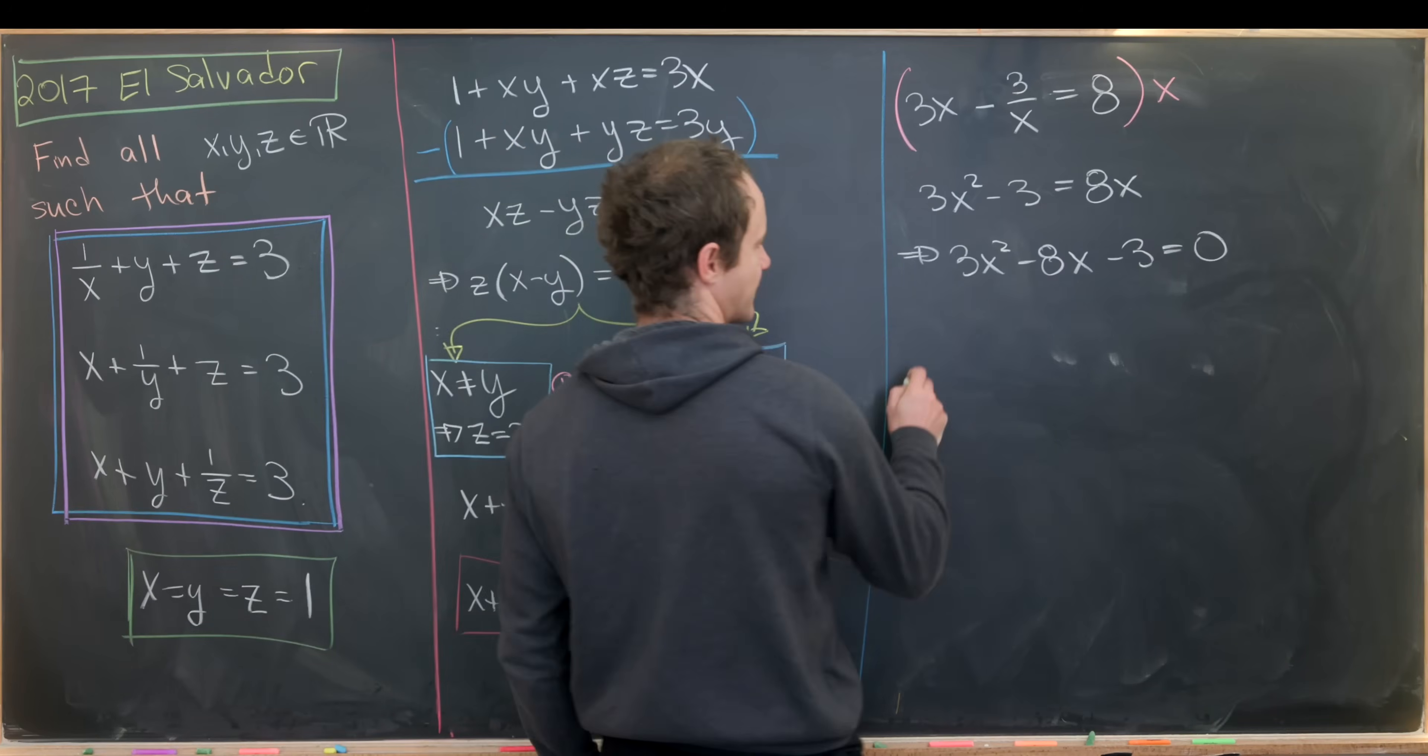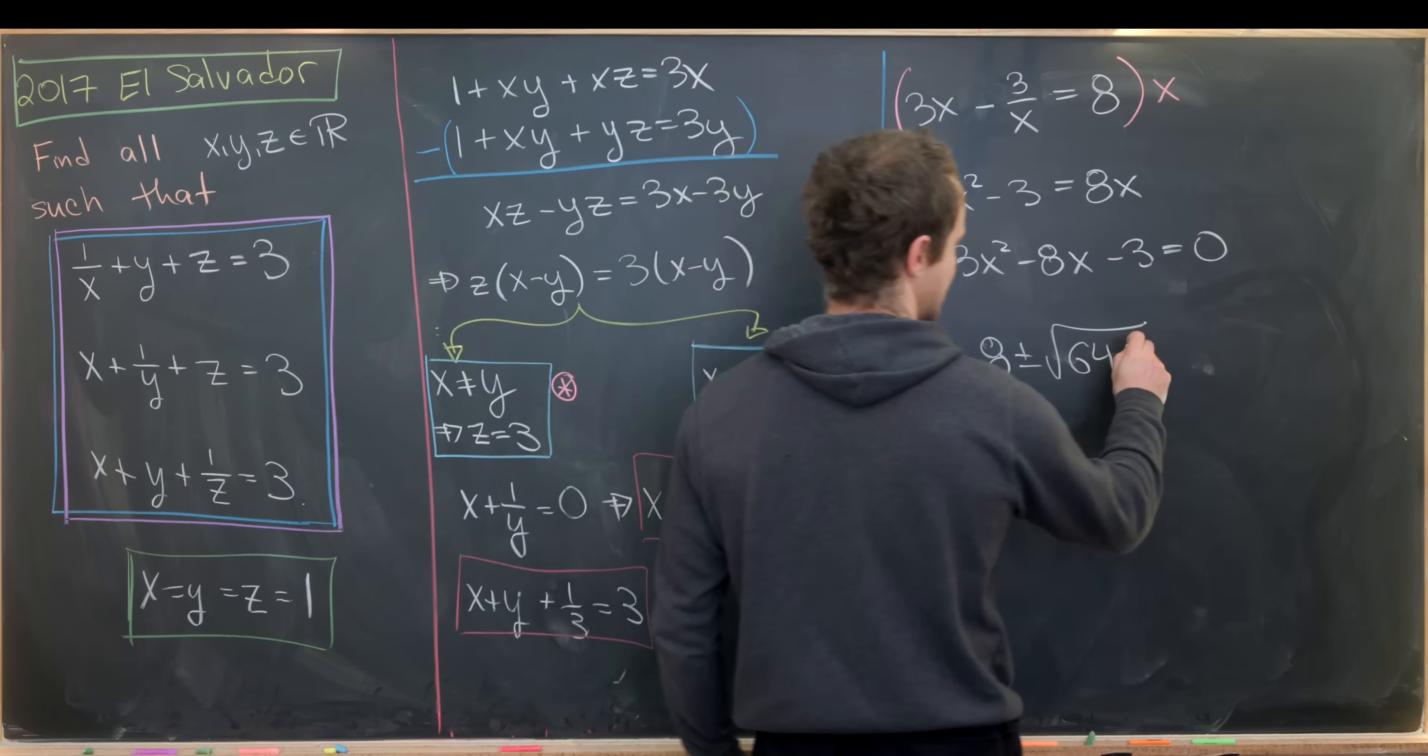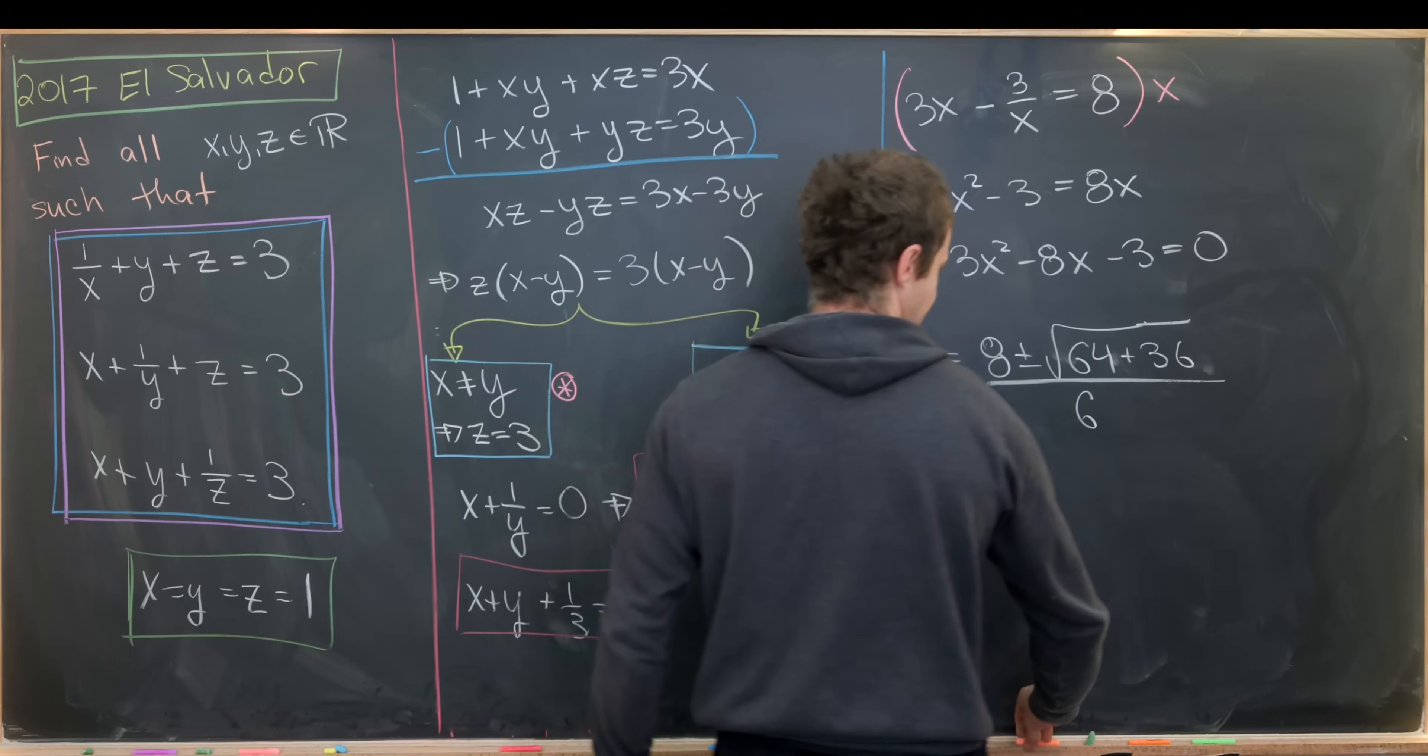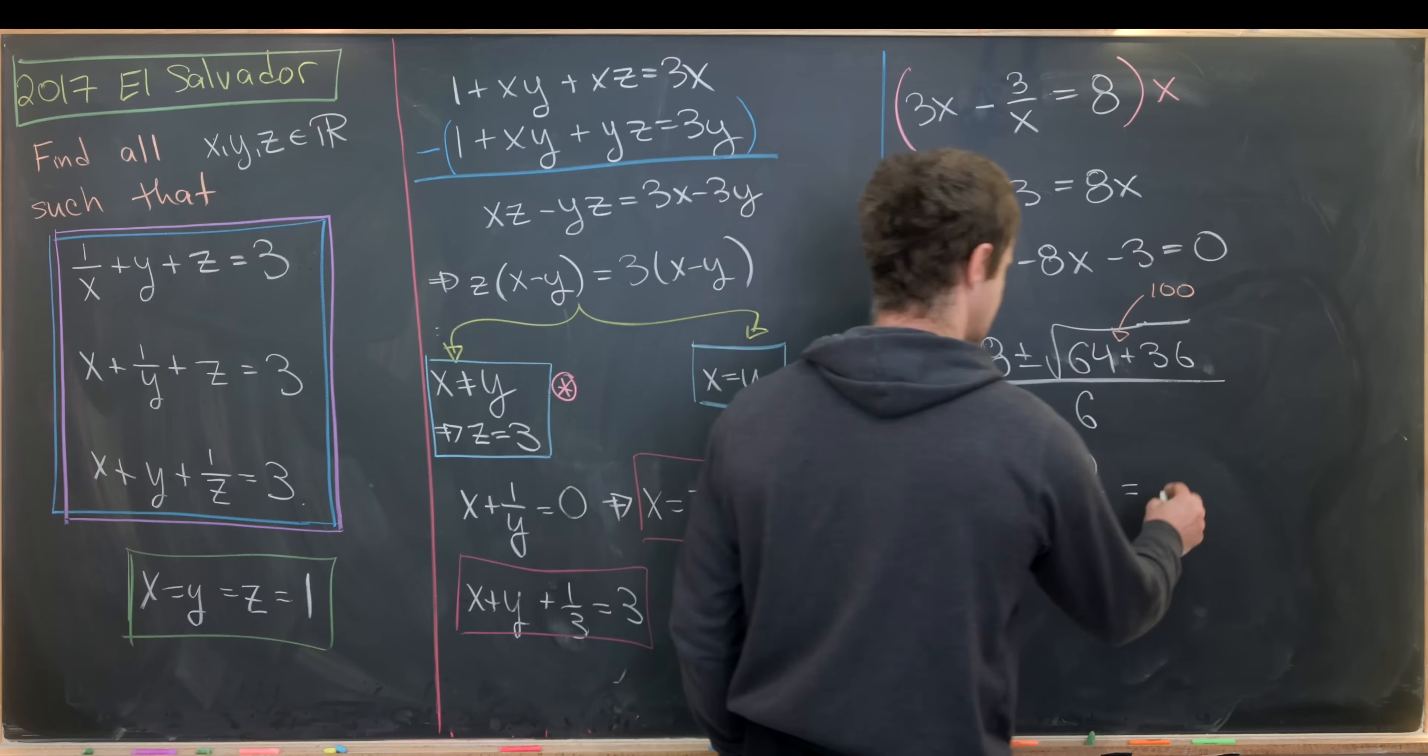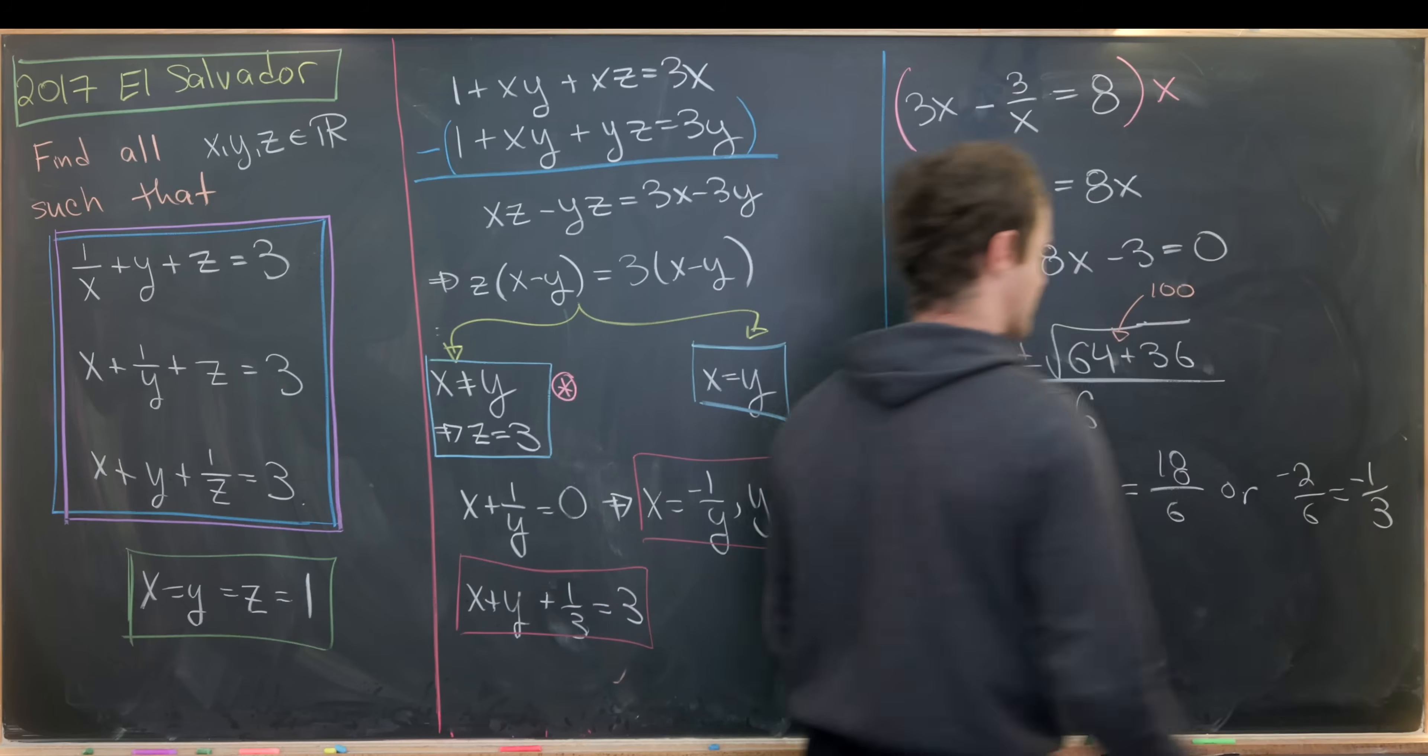Using quadratic formula we'll have x equals 8 plus minus the square root of 64 minus 4 times a times c that's plus 36 over 6. Now 64 plus 36 is 100, the square root of 100 is 10, so this is 8 plus minus 10 over 6. That's going to give us 18 over 6 or negative 2 over 6 which is negative 1 over 3.